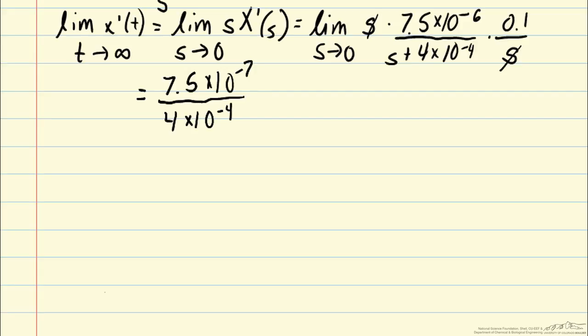And we can also rewrite this as 1.875 times 10 to the minus 3. And this is the same result that we saw in earlier videos by actually calculating the time dependence of x prime.